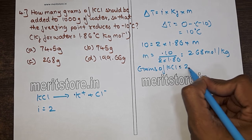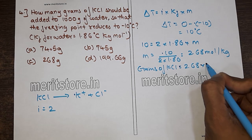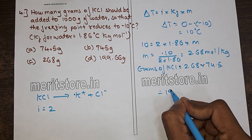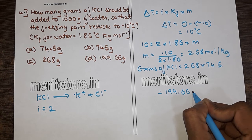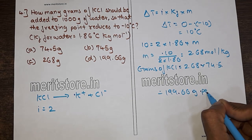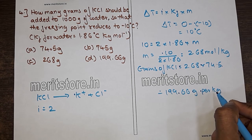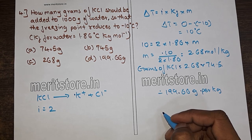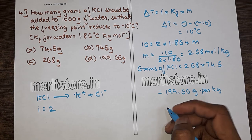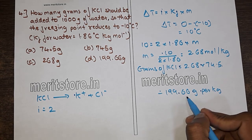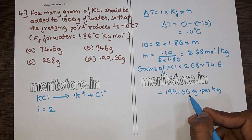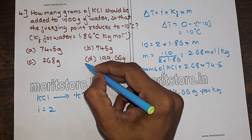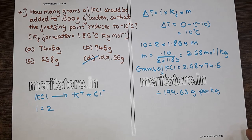Grams of KCl = 2.68 × 74.5 = 199.66 g per kg of water. Therefore 199.66 grams should be added to 1 kg of water. This matches option D, so option D is the correct answer.